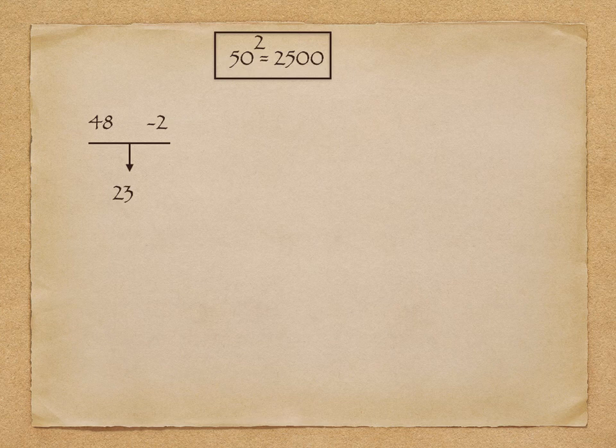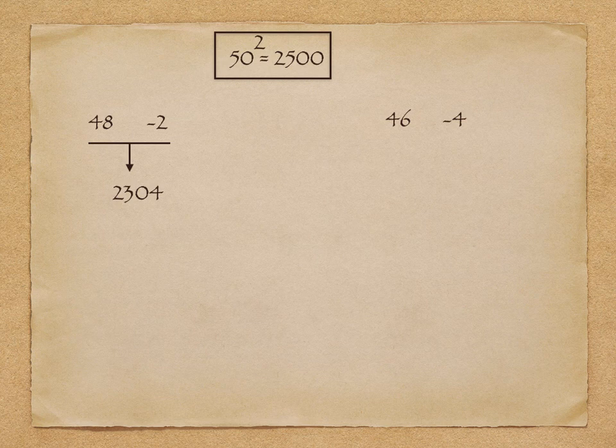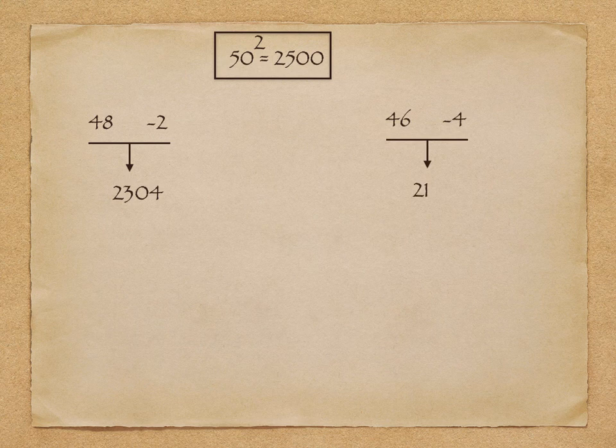Let's consider another example. The number is 46. 46 is 4 less than 50. To get the answer, I will subtract this 4 from 25, it will be 21, and the square of 4 is 16, so 2116 is the answer. Next number is 37. 37 is 13 less than 50.